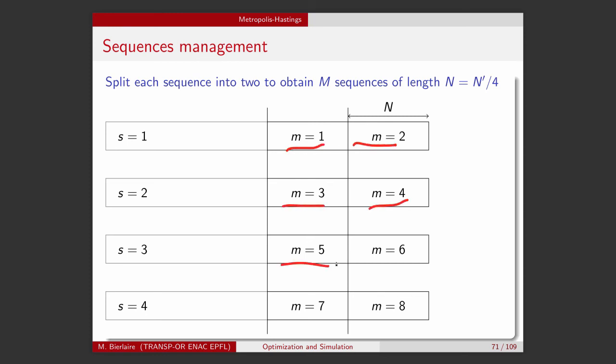And each of them has length capital N, which is 1 fourth of n prime. And I will consider each of these small sequences separately.